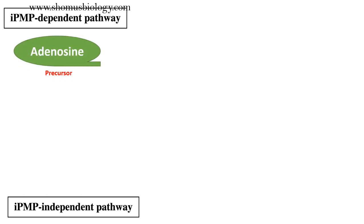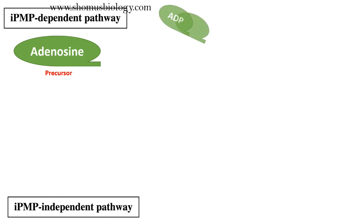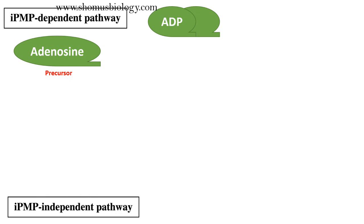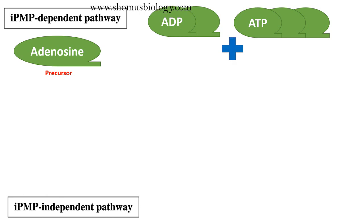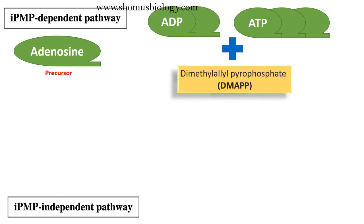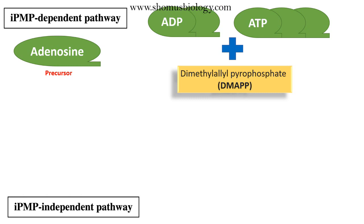The precursor for cytokinin in plant cells is adenosine, and along with that they need ADP or ATP in order to produce the intermediate which will help the plant cells to produce ZRT. If this adenosine is tagged with either ADP or ATP, then they will form dimethylallyl pyrophosphate, or DMAPP. This is a primary ingredient or intermediate for the synthesis of zeatin, the naturally produced cytokinin in plant cells.